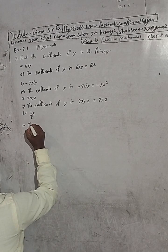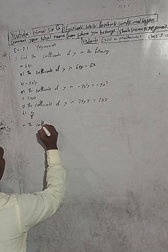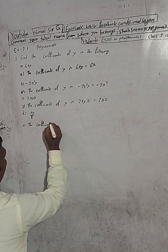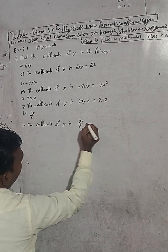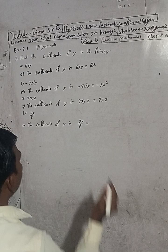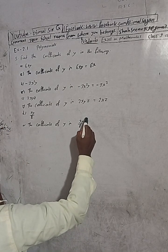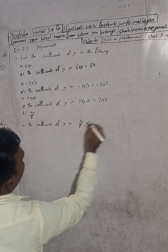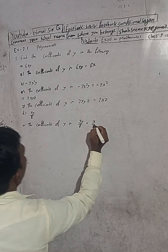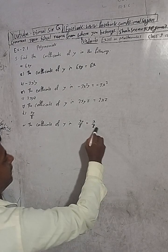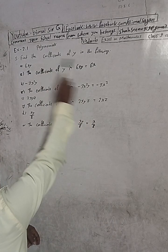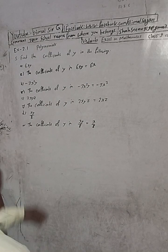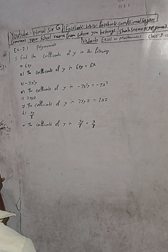Finally, the coefficient of y in xy/8. Except this y, what is the term? x/8. So x/8 is the coefficient of y. Here, 1/8 is the numerical coefficient and x is the literal coefficient. Since the question asks for 'coefficients,' we find both literal as well as numerical coefficients.